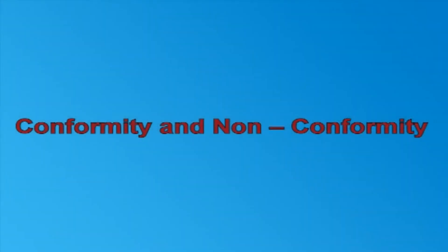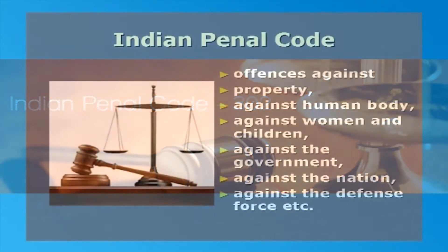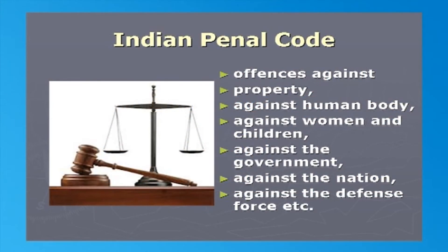Now, let us pass on to conformity and non-conformity. An act becomes a crime when it is not only forbidden by the society, but also a certain punishment is prescribed in the law books. The Indian Penal Code has defined various categories of crimes such as offences against property, against human body, against women and children, against the government, against the nation, against defence forces, etc., and has prescribed appropriate punishments for each category of crime.